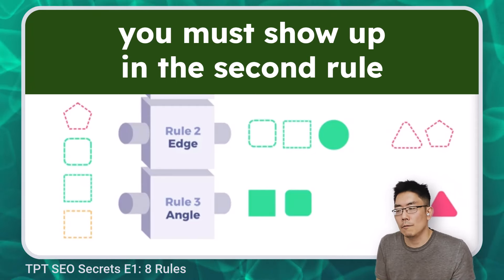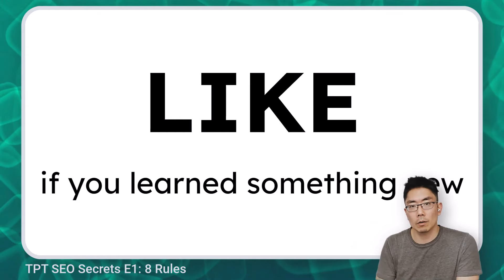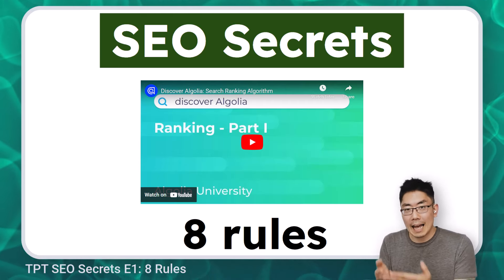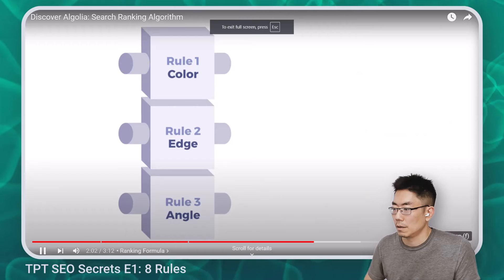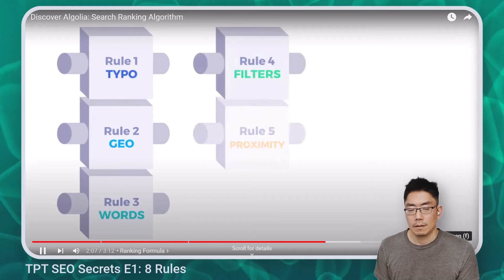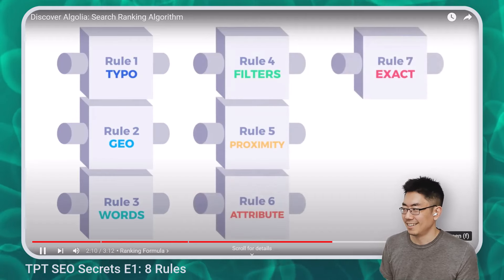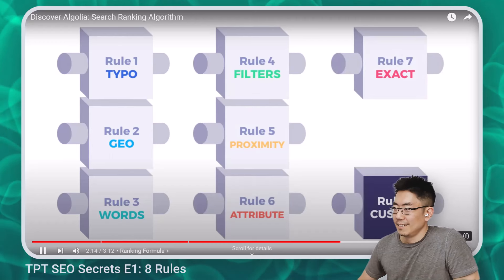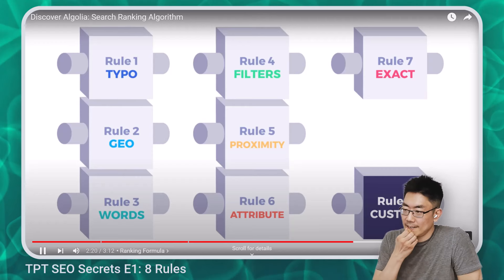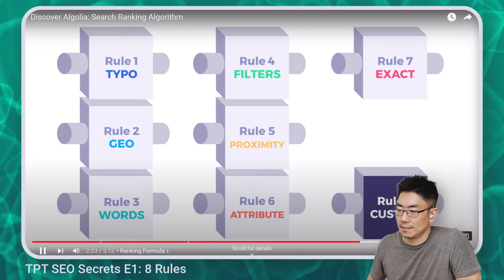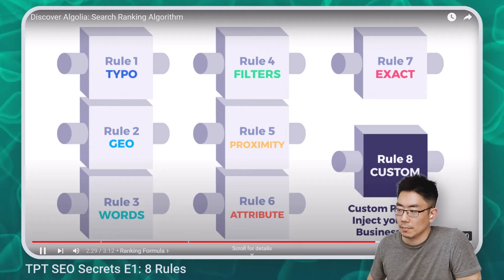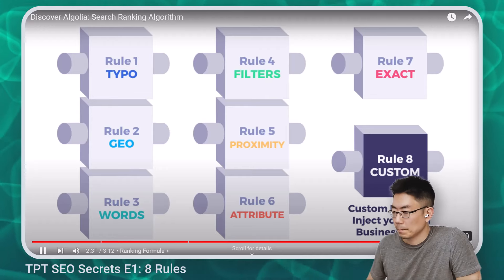If you've learned something new in this video so far, can you please like the video? It lets me know that I should make more content like this. Now let's look at the eight rules that Algolia search engines use. Algolia's ranking formula criteria are: typo, geo, words, filters, proximity, attribute, exact, and custom. Each one looks at a different signal — such as the number of typos, best matching attributes, and so on — and assigns a score to the record used for sorting. The last one, custom ranking, is key for good relevance as it lets you inject your own business data into the ranking.